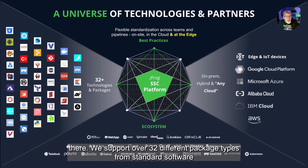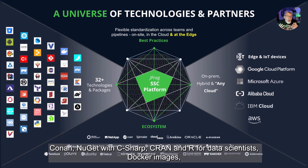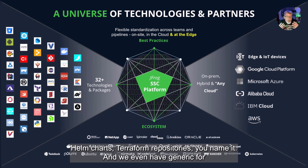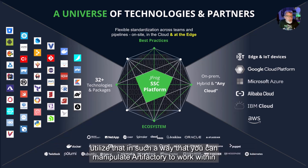We support over 32 different package types — from standard software languages like npm, Conan, NuGet with C#, CRAN and R for data scientists, Docker images, Helm charts, Terraform repositories — you name it. We even have a generic type for things that don't have a normal package type, allowing you to utilize Artifactory within the confines of your organization.